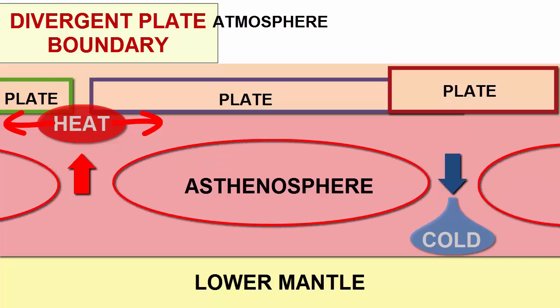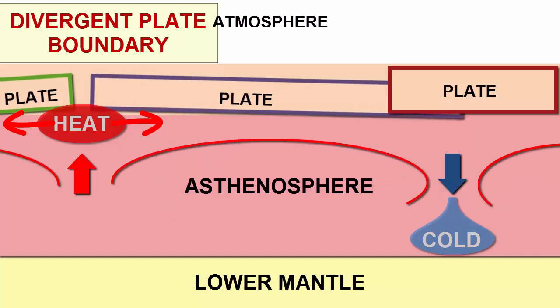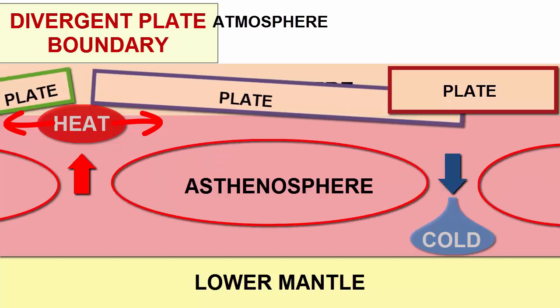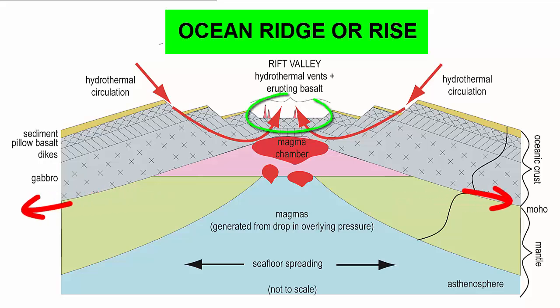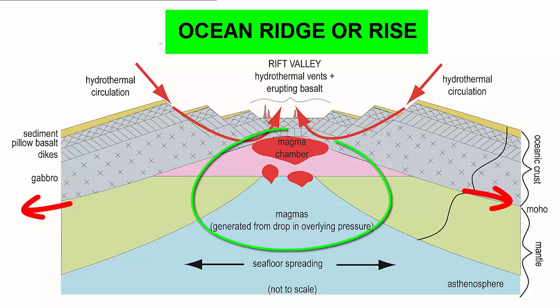The buildup of heat and material below pushes the plate upward and creates a linear mountain ridge. When these form along the ocean floor, we call them ocean ridges and rises. As the plates separate, a rift valley forms atop the ridge. The drop in pressure on the underlying mantle rock causes it to melt, and now that it's lower density, the melted rock or magma rises to the surface and erupts along the center of the rift valley.